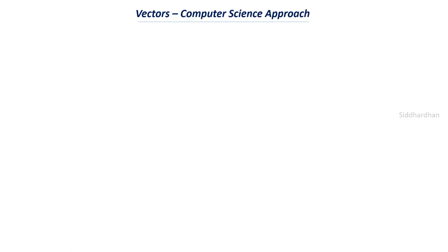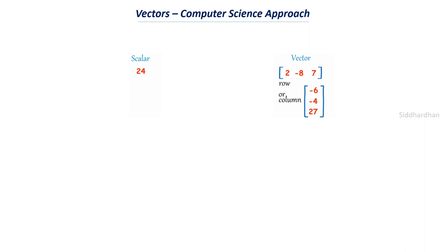Let me give you a quick recap of what vectors mean in computer science. Scalar is nothing but a number — just an individual number, like 20, 40, or 100. Vectors are nothing but a list of numbers. It can be either a row or a column of numbers — only one row or one column. If we have multiple rows and multiple columns, it becomes a matrix. A vector contains numbers in only one row or one column.